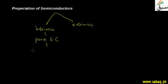In semiconductors, we have some examples. The most important examples are silicon, with symbol Si, and germanium. These are the best examples of intrinsic semiconductors.